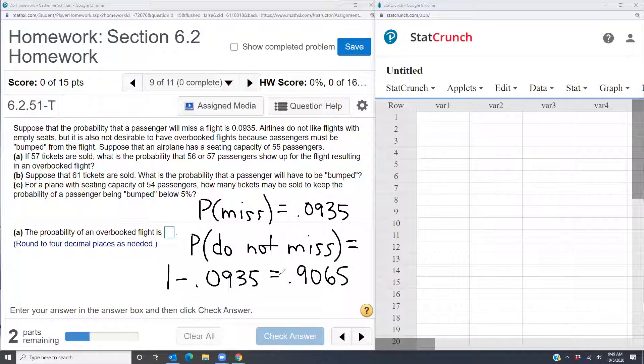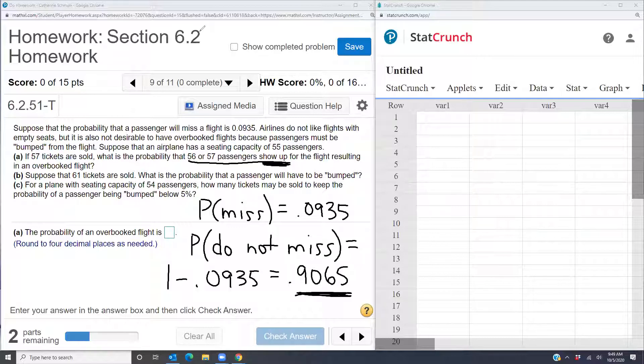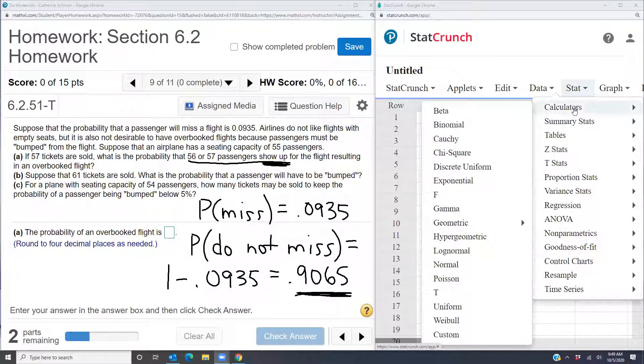And in part A of the problem, we're looking for the probability that 56 or 57 passengers show up. So show up is the same as not missing. So the probability that they do not miss or that they show up is .9065. So that's going to be my P. This is a binomial distribution because it meets all of the requirements. And so I'm going to use my binomial calculator. So I'll open up StatCrunch and I'll go to Stat calculators binomial.